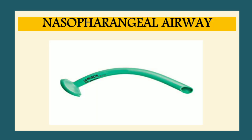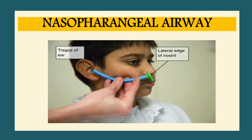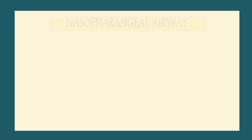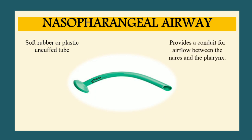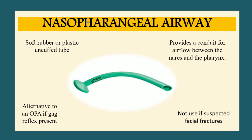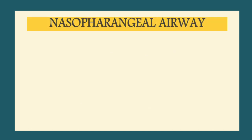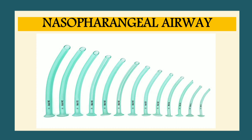The next supraglottic device is the nasopharyngeal airway, measured from the lateral edge of the nostril to the tragus of the ear. The NPA is a soft rubber or plastic uncuffed tube that provides a conduit for airflow between the nares and the pharynx. It is used as an alternative to an OPA and can be used in conscious as well as semi-conscious individuals when a gag reflex is present. Avoid placing NPAs in individuals with obvious facial fractures. Sizes range from 12 French to 36 French.